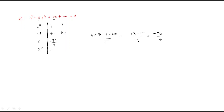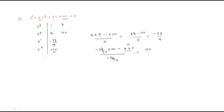The next entry in the s¹ row is 100. For the s⁰ row: (−72/4 × 100 − 4 × 0) / (−72/4). Both terms cancel, leaving 100. So the s⁰ entry is 100.